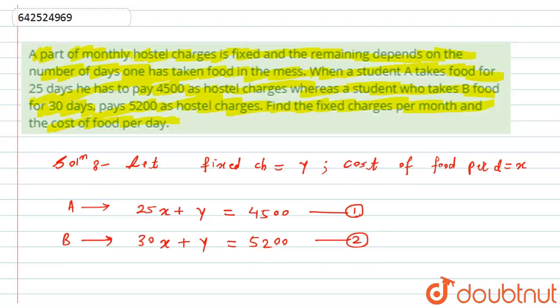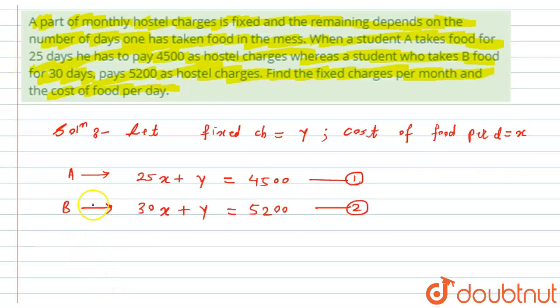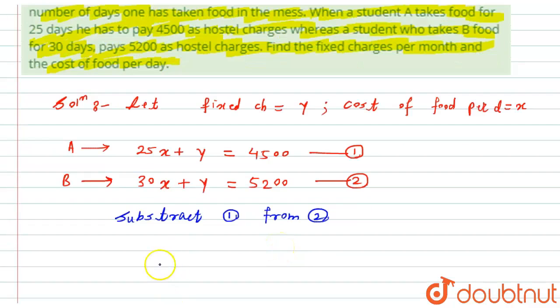Now we will try to solve this equation. Subtract equation 1 from 2, we get simply 5x equals 700. After solving, you will get x value that is 700 divided by 5, which equals 140 rupees.